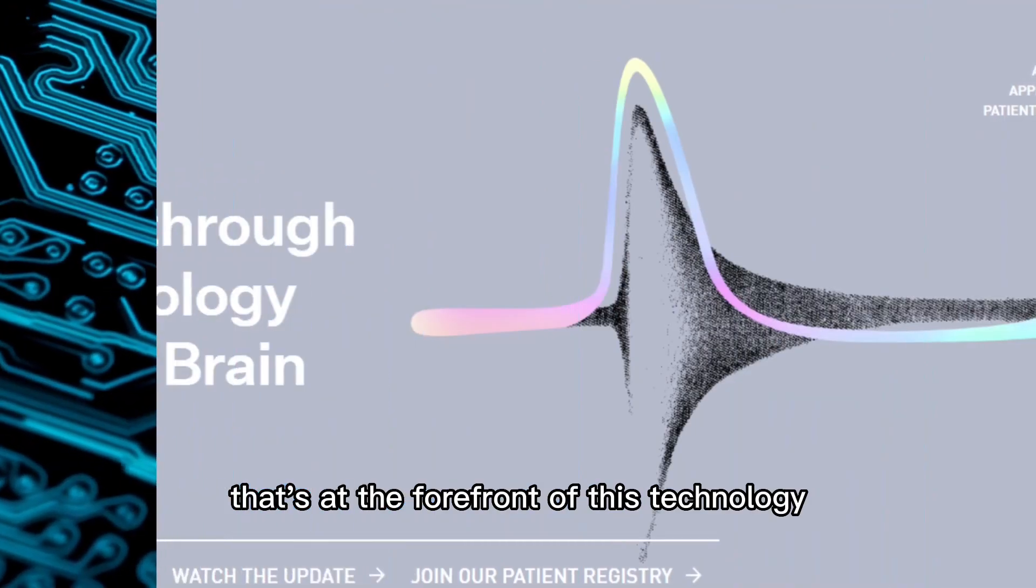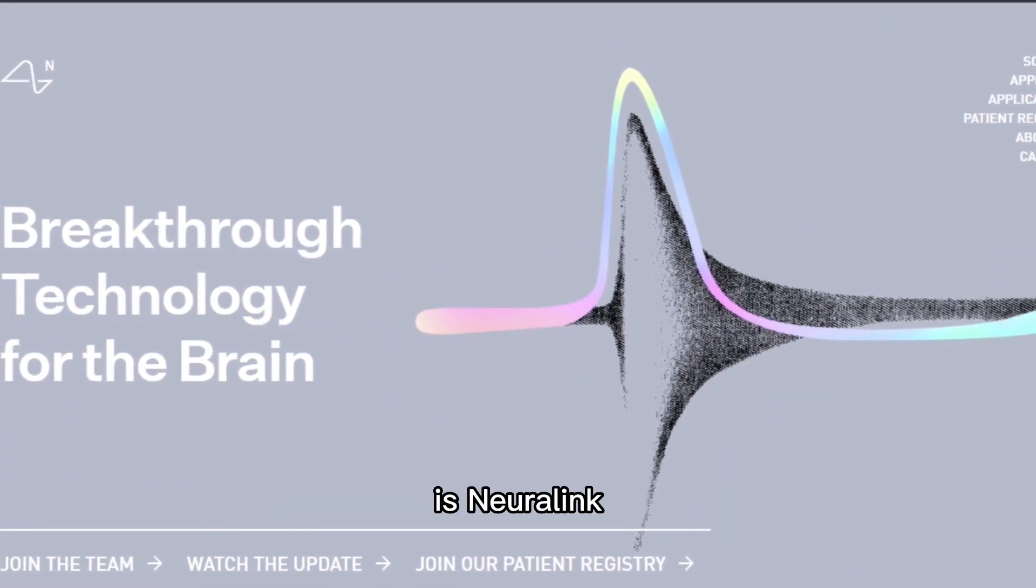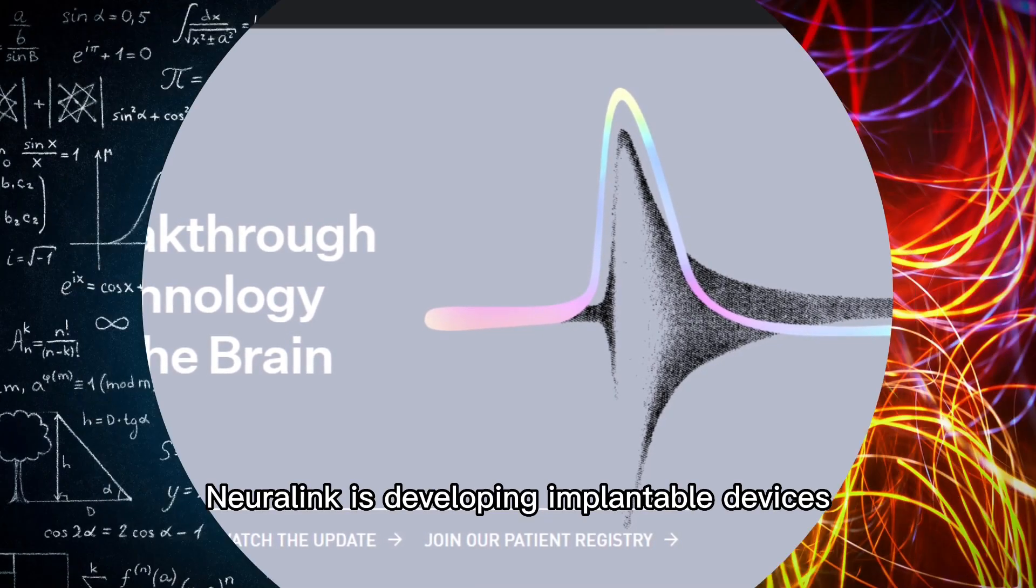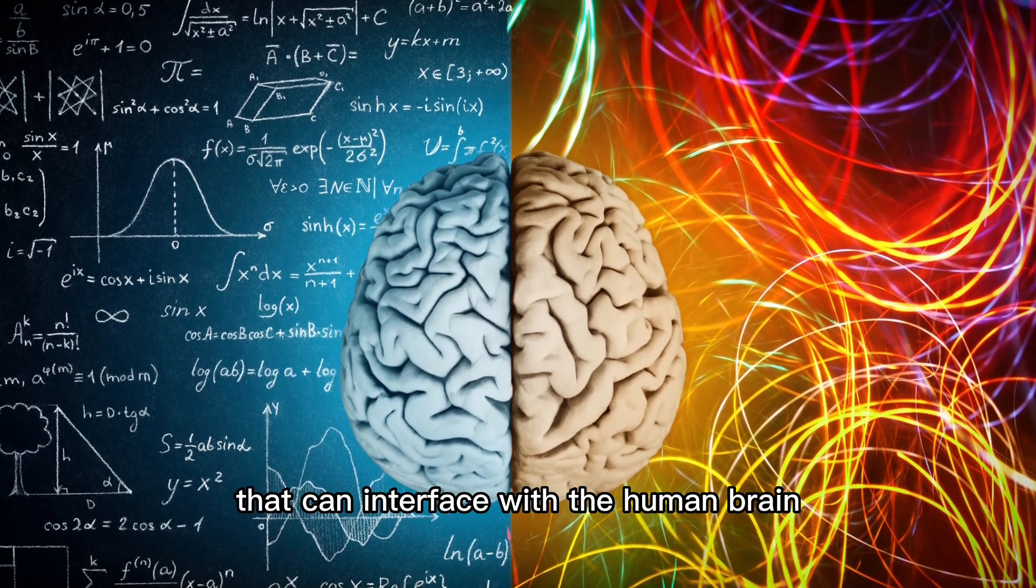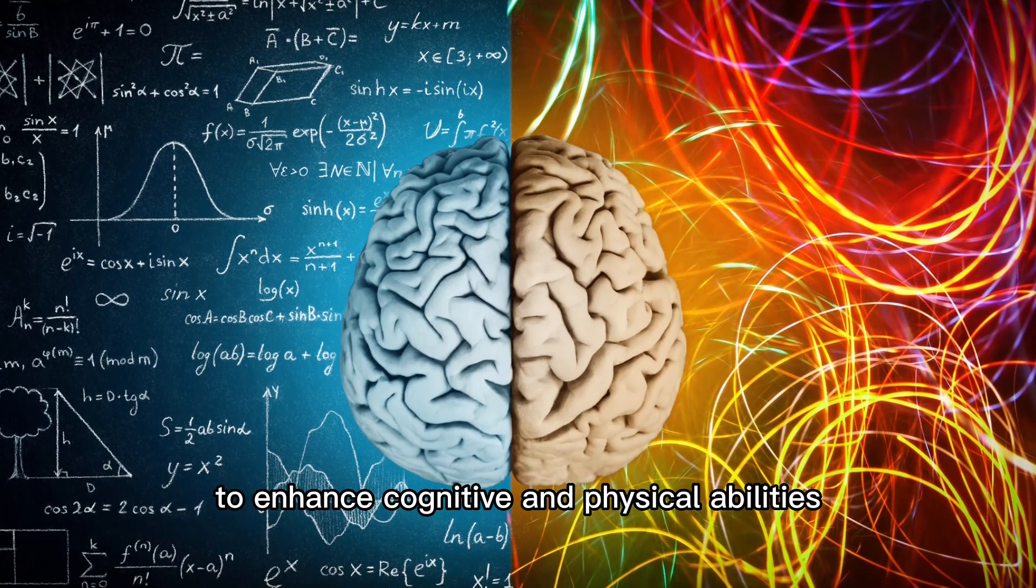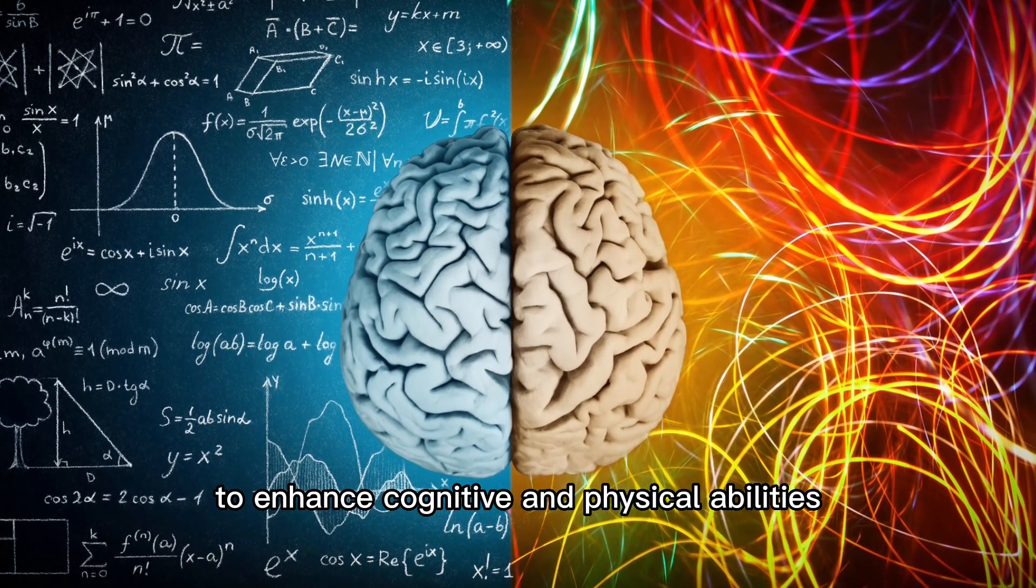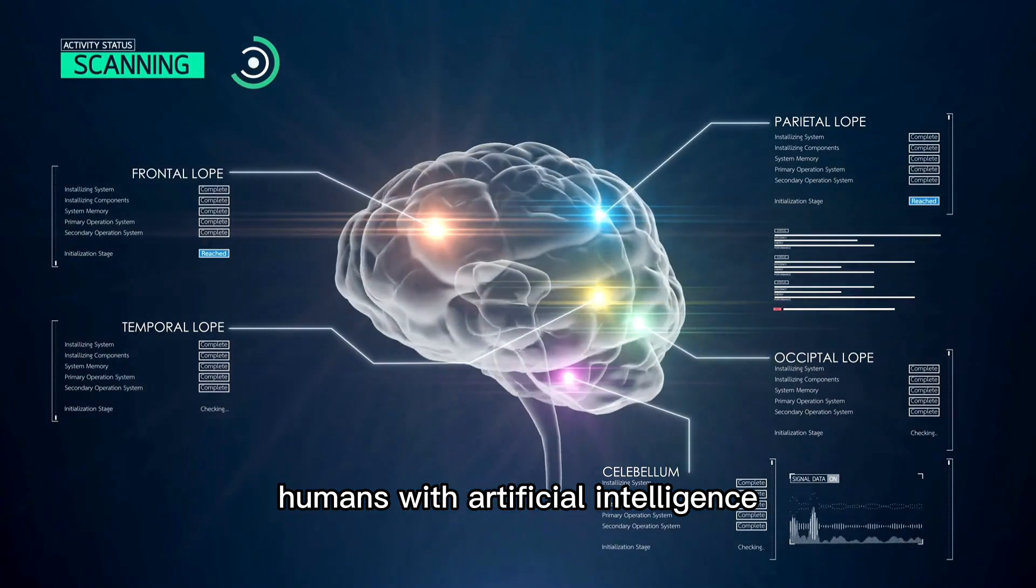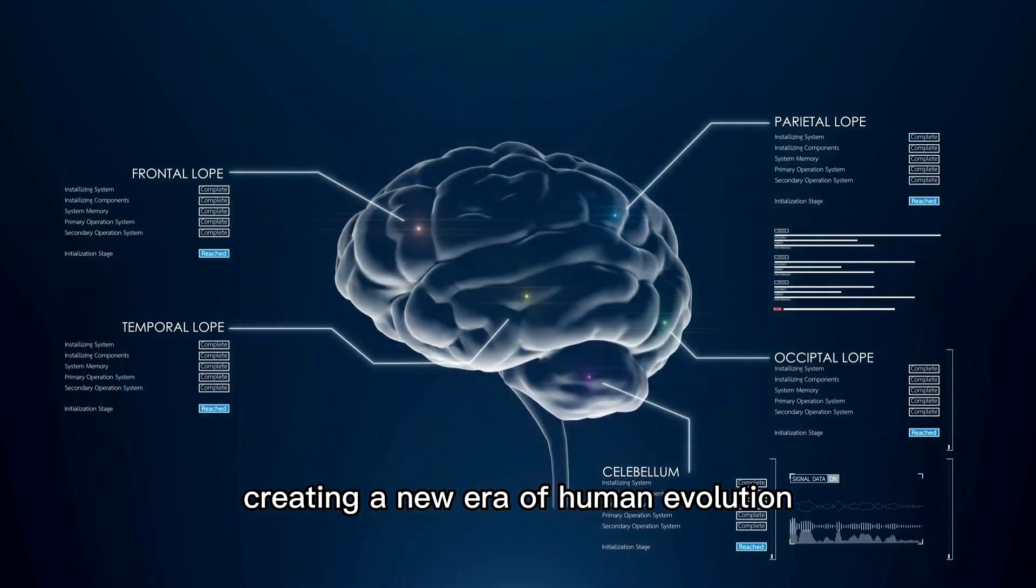And one company that's at the forefront of this technology is Neuralink. Founded by Elon Musk, Neuralink is developing implantable devices that can interface with the human brain to enhance cognitive and physical abilities. Their goal is to merge humans with artificial intelligence, creating a new era of human evolution.